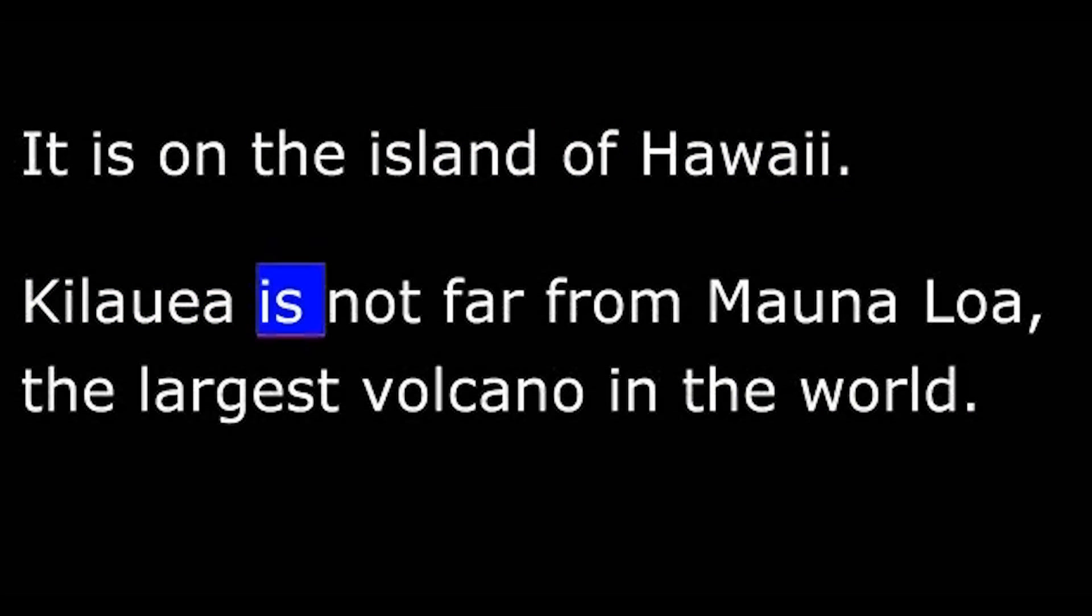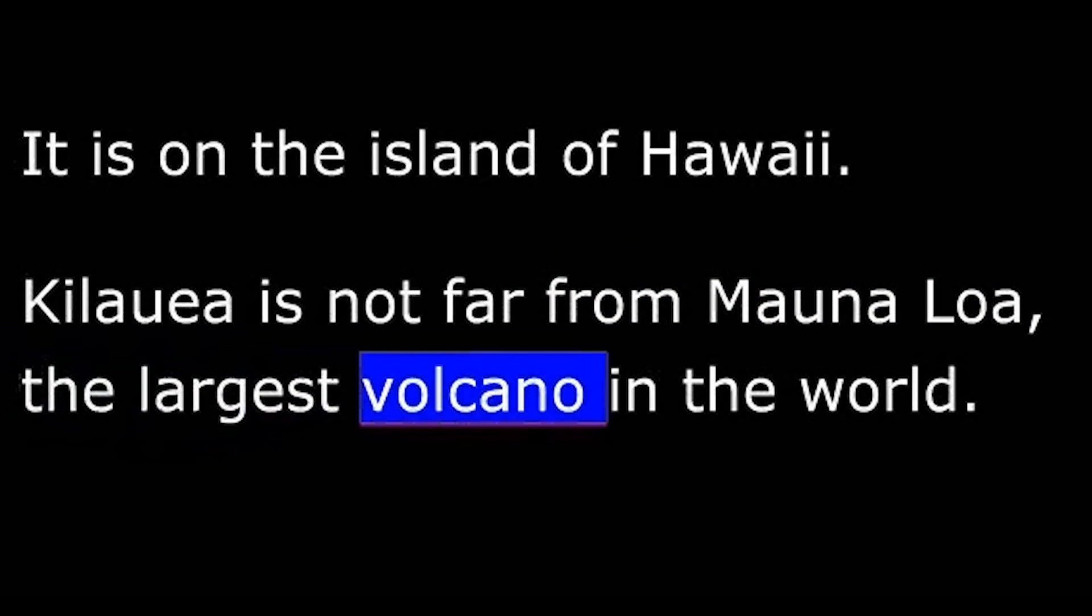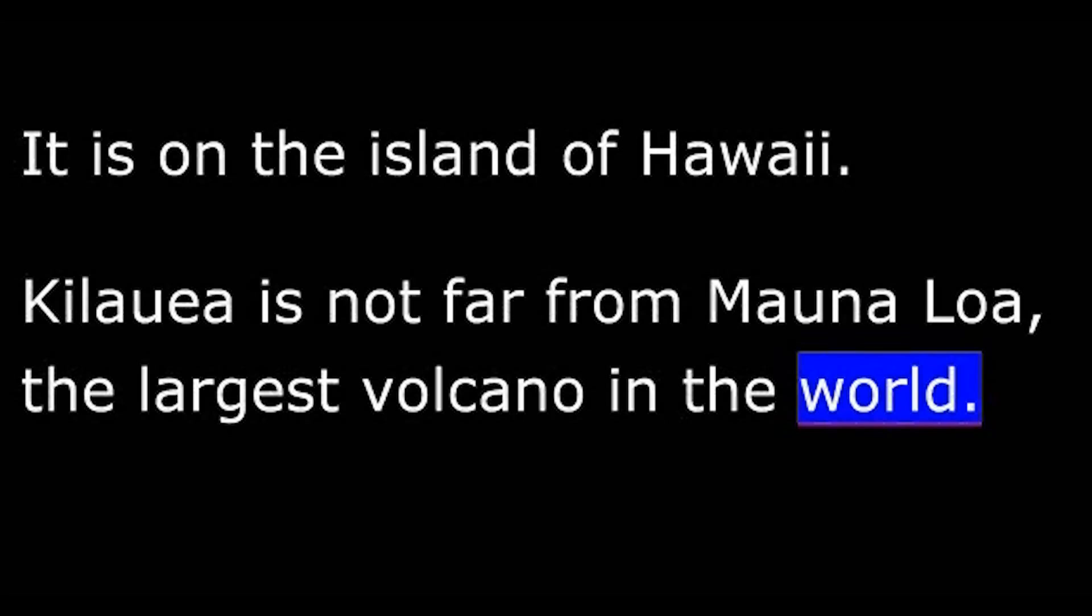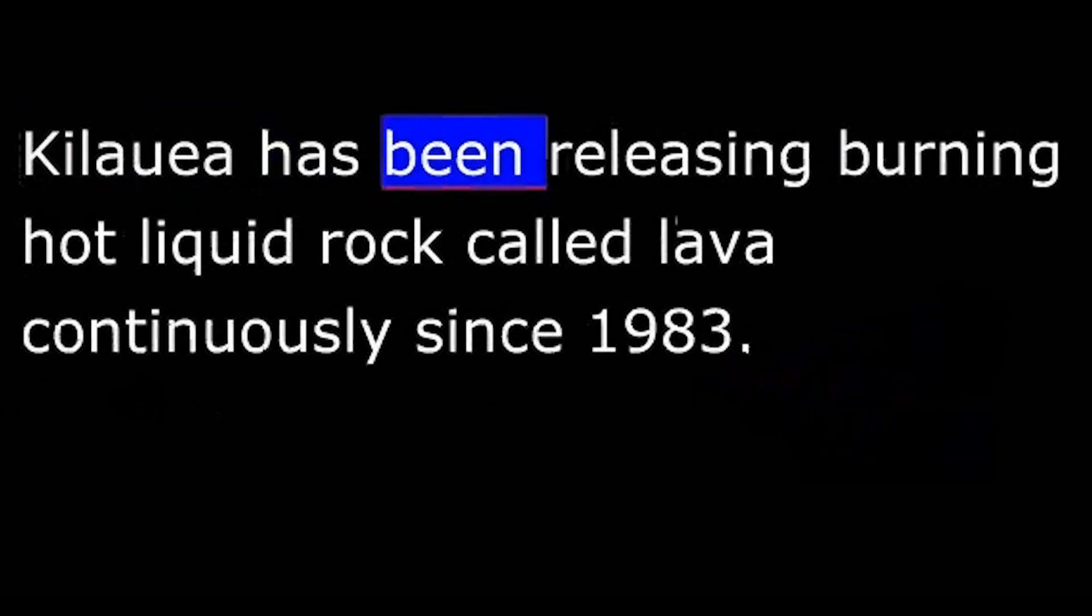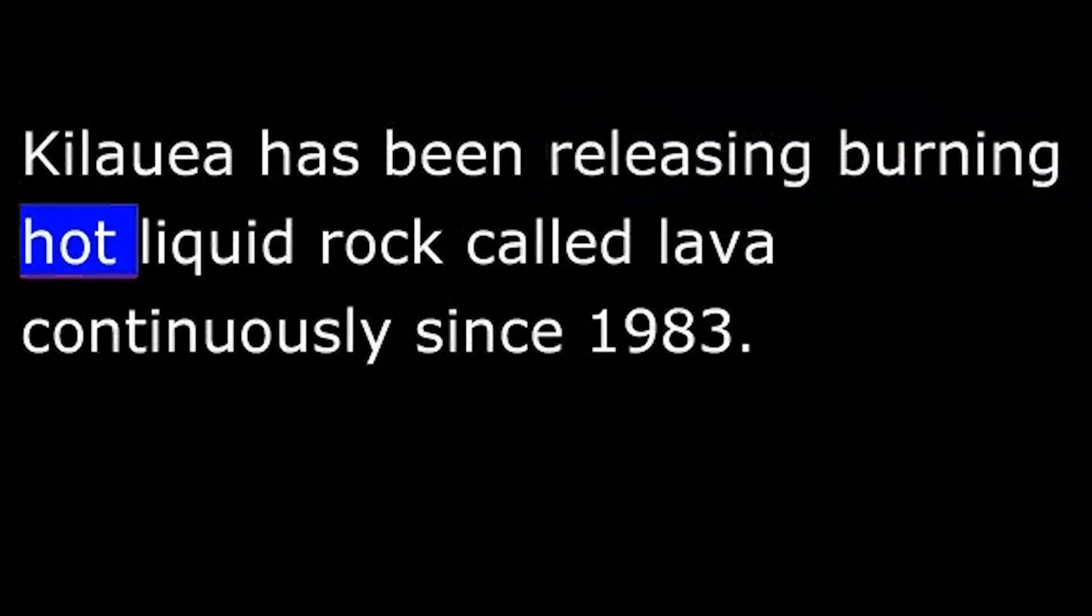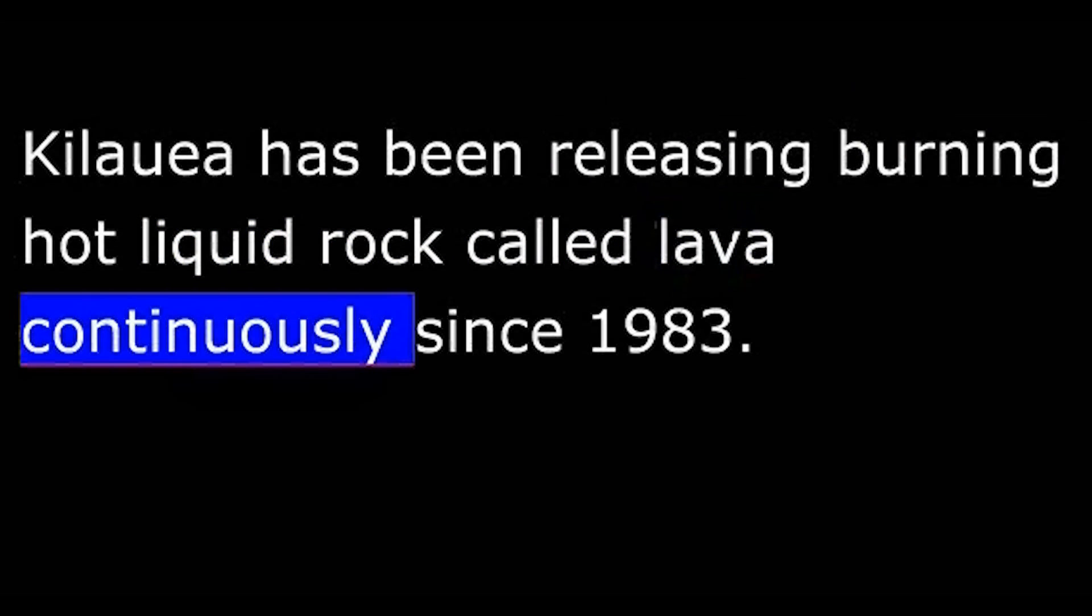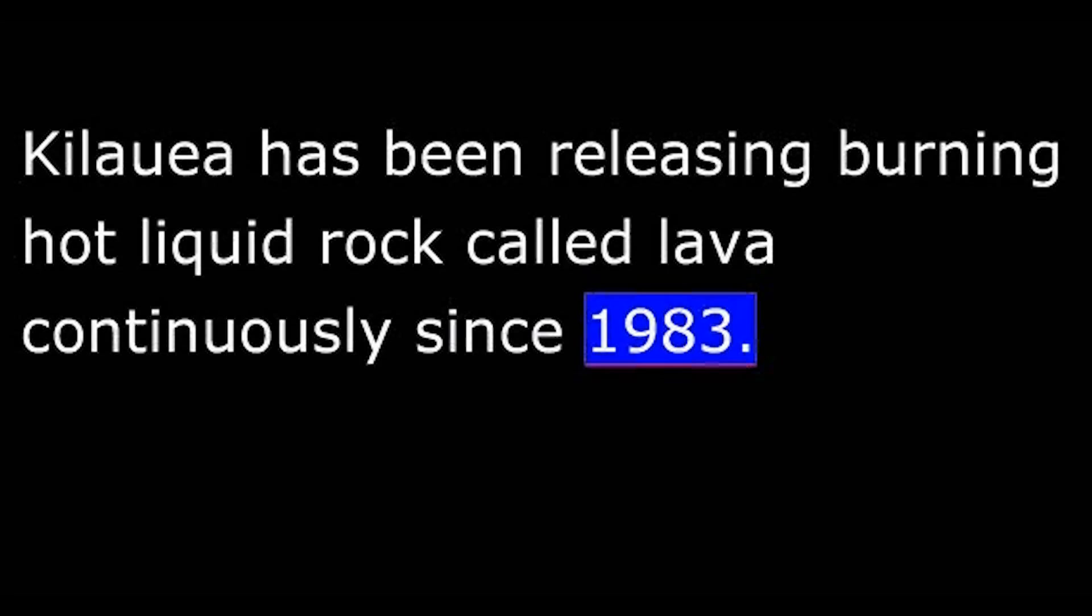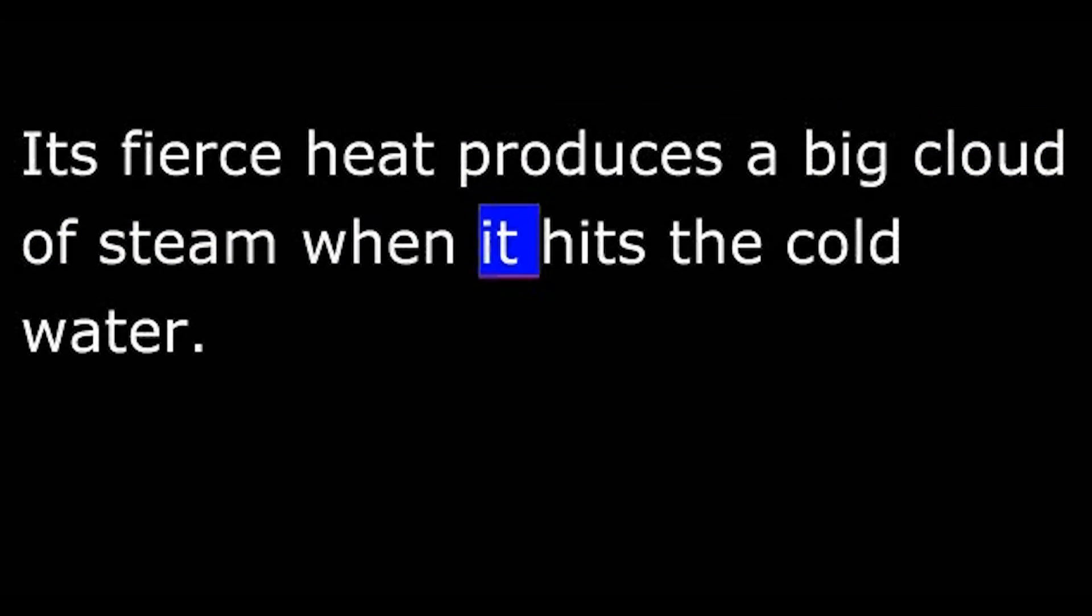Kilauea is not far from Mauna Loa, the largest volcano in the world. Kilauea has been releasing burning hot liquid rock called lava continuously since 1983. The lava flows down the mountain to the Pacific Ocean. Its fierce heat produces a big cloud of steam when it hits the cold water.